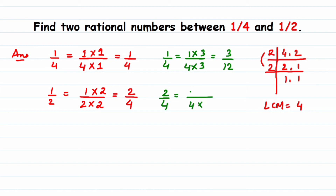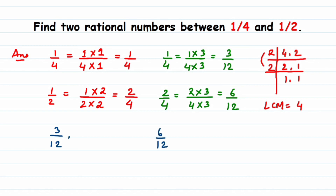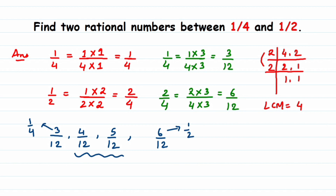Similarly, multiplying 2/4 by 3/3 gives us 6/12. Note that 1/4 equals 3/12 and 1/2 equals 6/12 — they are equivalent forms. Now the numerators are 3 and 6, so the gap is larger. Between 3/12 and 6/12 we can find exactly two numbers: 4/12 and 5/12.